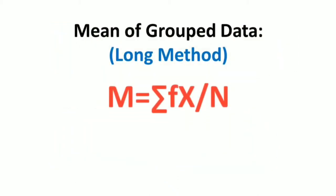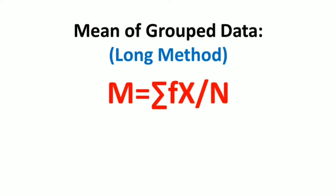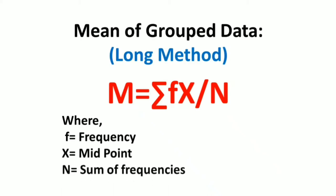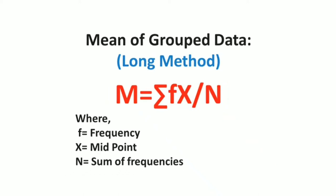The formula for the long method is: M equals summation of fx divided by n, where f is the frequency of the class interval, x is the midpoint of the class interval, and n is the sum of frequencies.